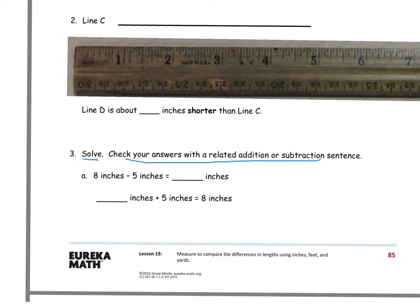It says 8 inches minus 5 inches equals how many inches. When we're working with the same units, we can simply subtract. 8 minus 5—if I needed to draw this out, I have 8 tally marks and I need to take away 5 of them. I'm left with 3.